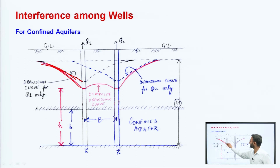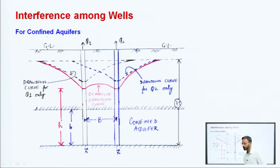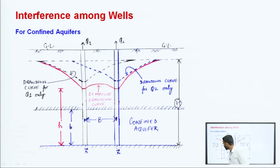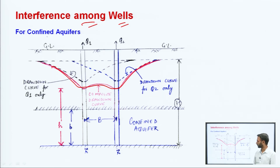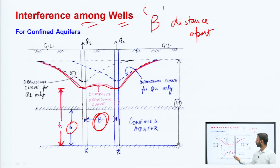In the vicinity of well one, the drawdown curve thoda zyada dekhne ko milega due to the effect of the second well also. Similarly, in well two, drawdown is slightly more. Between the two wells, the discharge is increased. The total resultant is a composite drawdown curve. This is the confined aquifer with thickness b, final water level h, and the two wells are b distance apart.